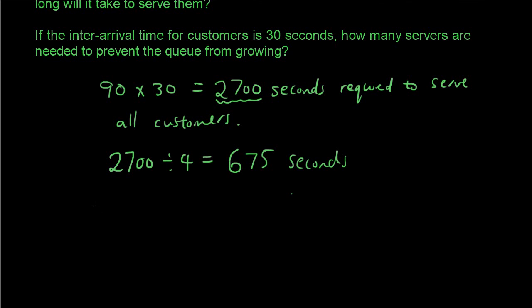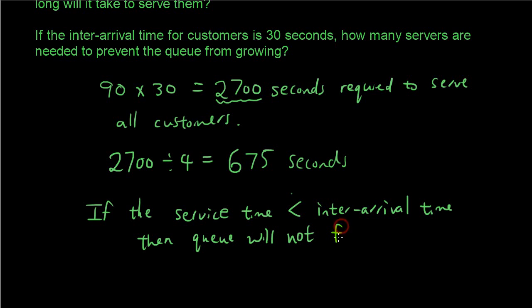So, as we said previously, if the service time is smaller than the inter-arrival time, if you think about it, if the time it takes to serve a customer is smaller, i.e. quicker than the time it takes between each customer arriving, then queue will not form or grow. Because as soon as the customer comes, you finish serving them before the next customer comes.